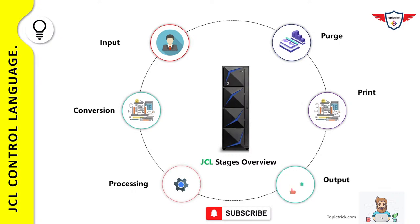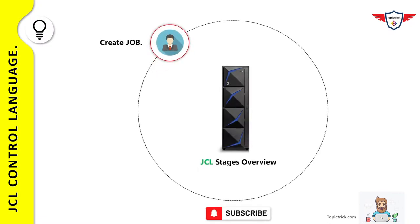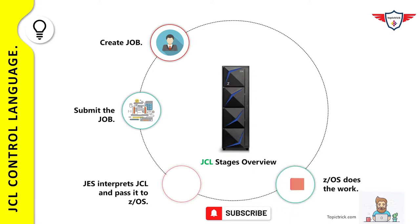Consider a programmer who wants to calculate the monthly tax for a specific department. First, he writes a JCL with all relevant information: the program name, input-output dataset names, and accounting information for the job card. Second, the programmer reviews and submits the job. Third, JES2 accepts the job and uses a converter program to analyze the JCL statements. If JES2 detects any JCL error, it issues a message and queues the job for output processing. If there is no JCL error, JES2 queues the job for execution.